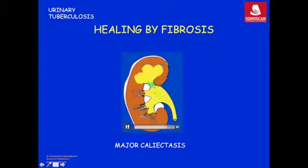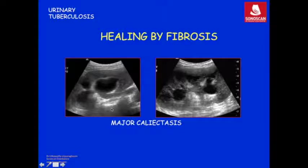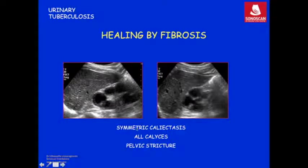Fibrosis can also involve the infundibulum of a major calyx resulting in major calycectasis. On a coronal scan, you see dilatation of the upper major calyx which on IVP would be cut off, showing only the lower calyces. Major calycectasis can involve one or multiple major calyces, and may be associated with cavitated granulomas and urothelial thickening. The calycectasis can be asymmetric — for example, mid and lower calyces dilated while the middle calyx is normal — which is very characteristic of tuberculosis.